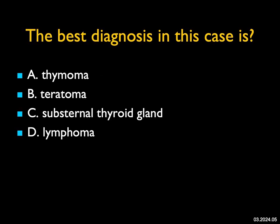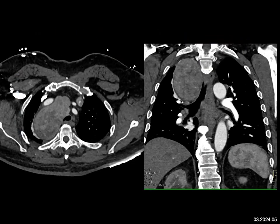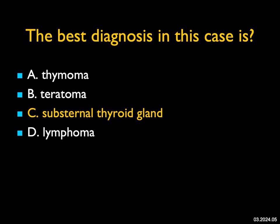The best diagnosis in this case: there's a mass pushing on the trachea that comes upward toward the thyroid but does not necessarily connect on these images. When you look at its appearance it doesn't really look like a teratoma, nor like lymphoma or thymoma. This is a very nice example of a substernal thyroid gland. Sometimes you can see it in direct continuity with the thyroid, but sometimes, like in this case, it really isn't.